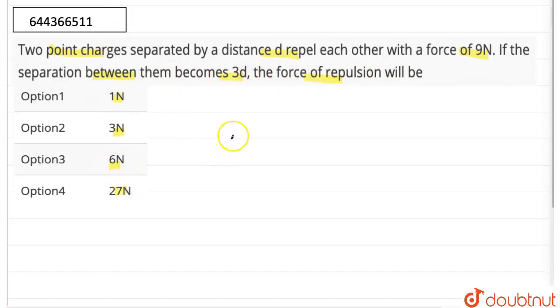So we have two point charges which are separated by a distance d. The distance between them is d. Now, let us say this charge is q1 and this charge is q2.